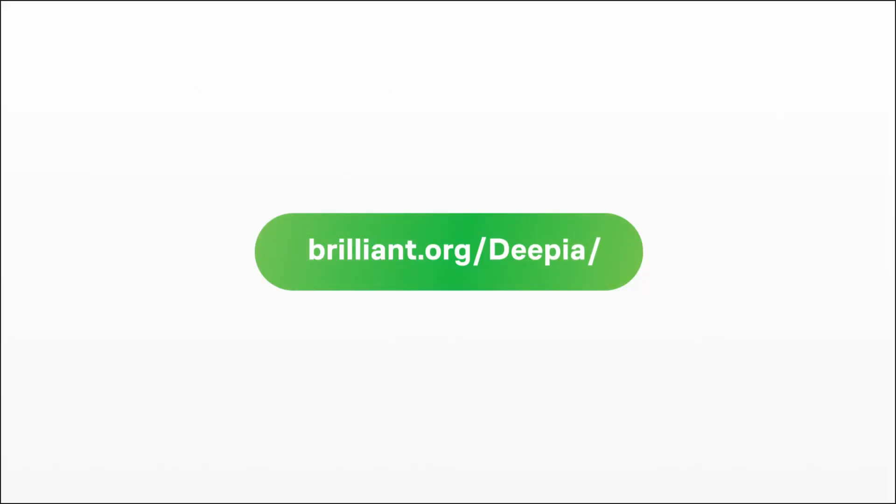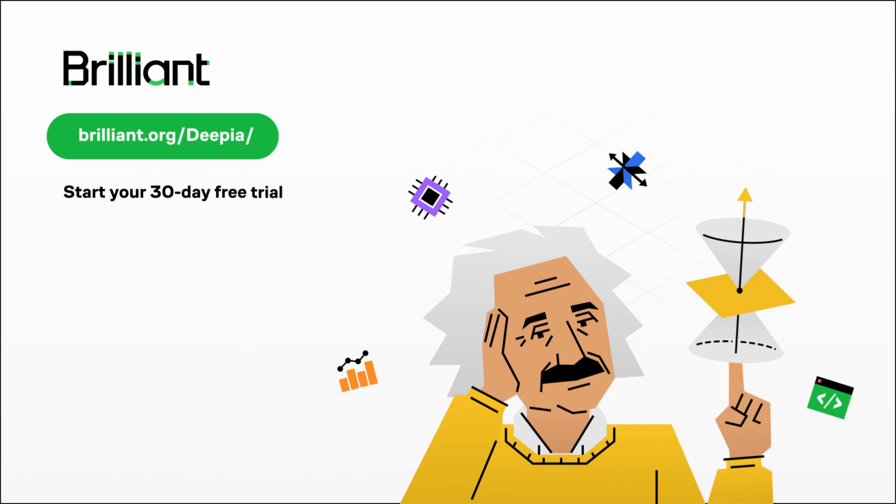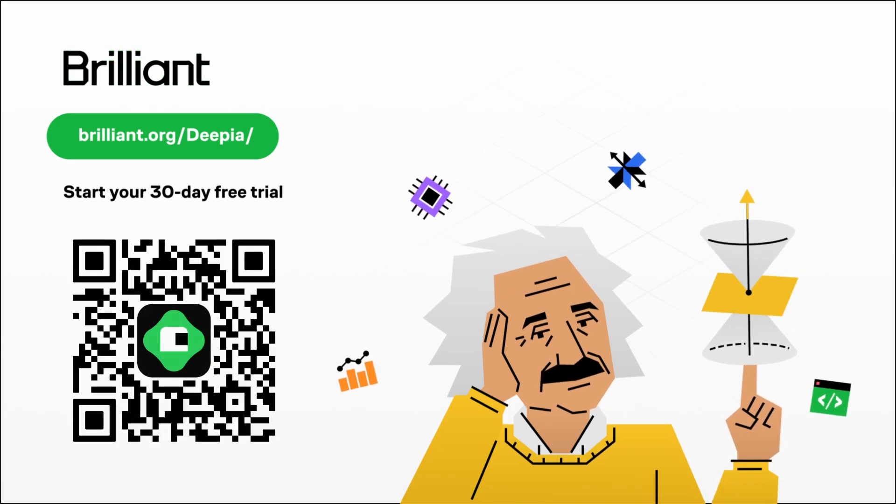If you want to try out Brilliant for free for 30 days, head over to brilliant.org/dpia, scan the QR code on screen, or just click on the link in the description. You'll also get 20% off an annual premium subscription.